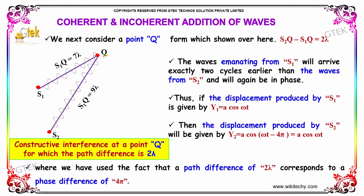We next consider a point Q, for which S2Q minus S1Q is equal to 2 lambda. The waves emanating from S1 will arrive exactly two cycles earlier than the waves from S2 and will again be in phase. Thus, if the displacement produced by S1 is given by y1 = a cos(ωt), whereas the displacement from S2 is given by y2 = a cos(ωt − 4π), which is cos(ωt) once again. So there is constructive interference at point Q for which the path difference is 2 lambda, where a path difference of 2 lambda corresponds to a phase difference of 4π.